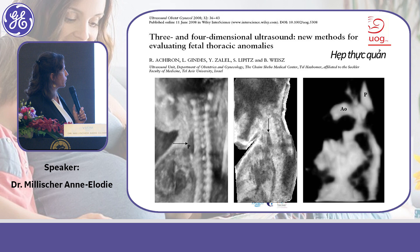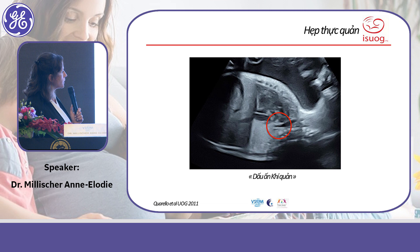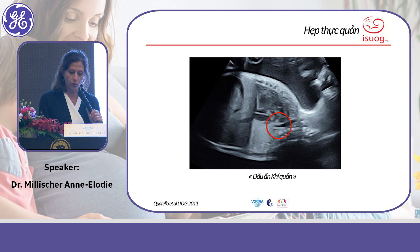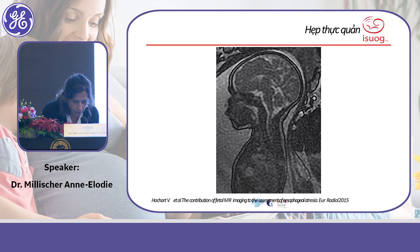Here is another example of dilatation of the esophagus. As you can see, the level of the vertebra involved is often the second or third thoracic vertebra. You can then confirm this with MRI.